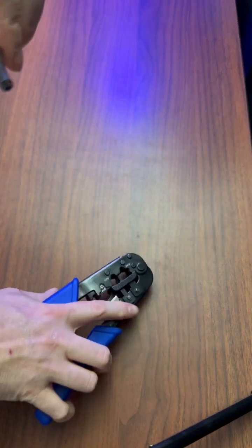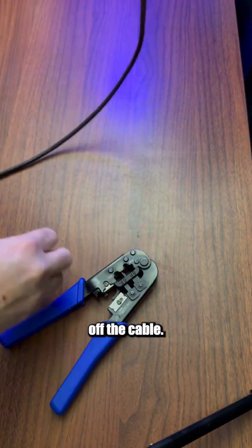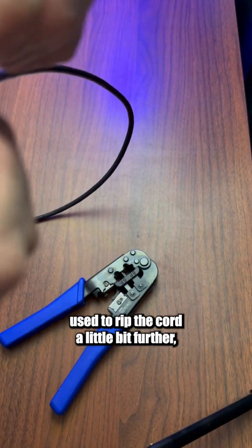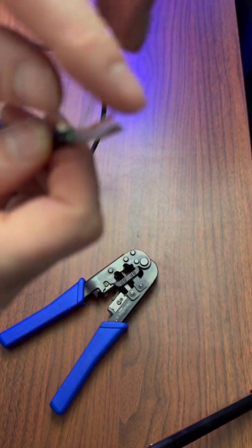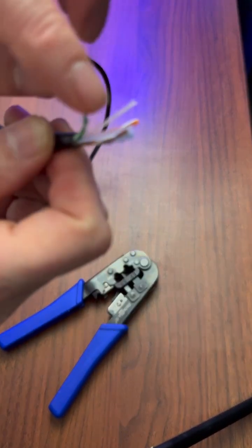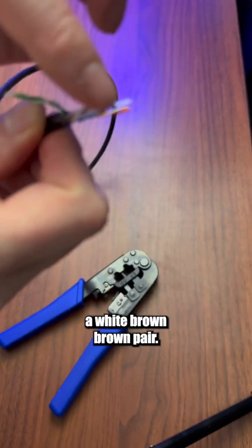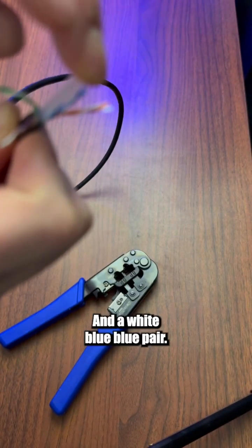Once we've stripped the sheathing back, go ahead and pull it off the cable. The horse ears here are used to rip the cord a little bit further and you'll have your four pairs. There's an orange-white-orange pair, a green-white-green pair, a white-brown-brown pair, and a white-blue-blue pair.